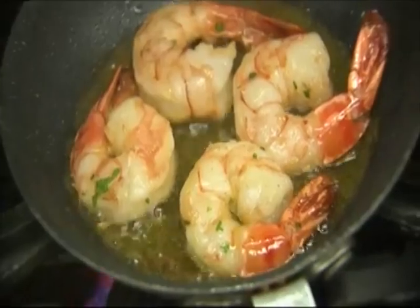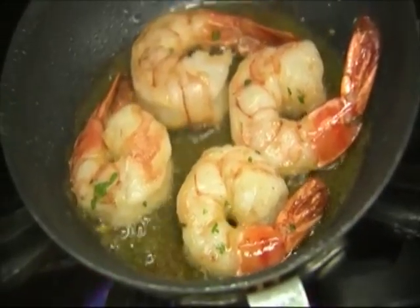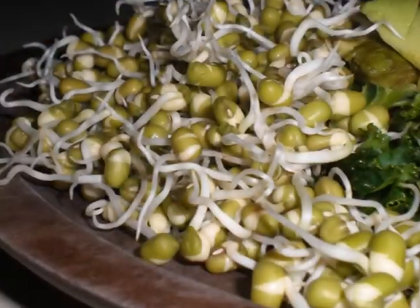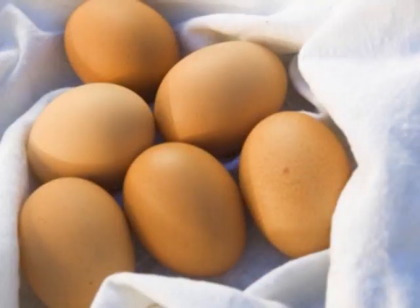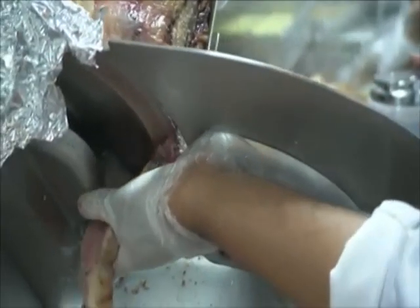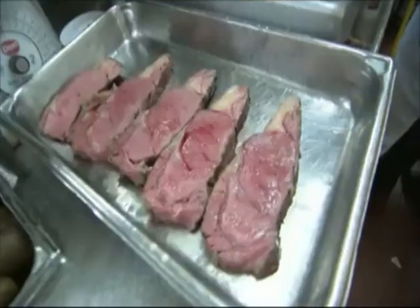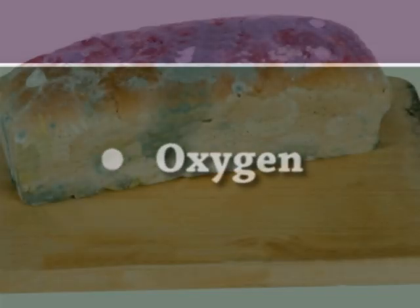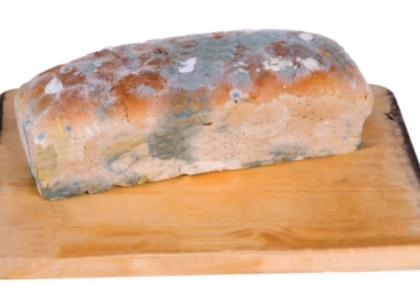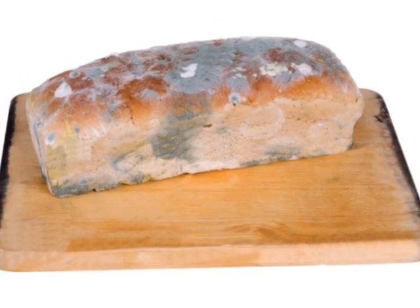Protein: food provides nutrients, vitamins and protein to bacteria. Food items high in protein, like meat, can readily support bacterial growth. Oxygen: most bacteria require oxygen to grow; some may survive without it but will not reproduce.